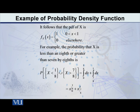As you can see on the screen, the probability of x being less than one-eighth, or x being greater than seven-eighths, which is denoted as the union of those two events, will be equal to the integral from zero to one-eighth of our f of x, plus the integral from seven-eighths to one of our f of x. Now, because our f of x is equal to one in this interval zero to one.